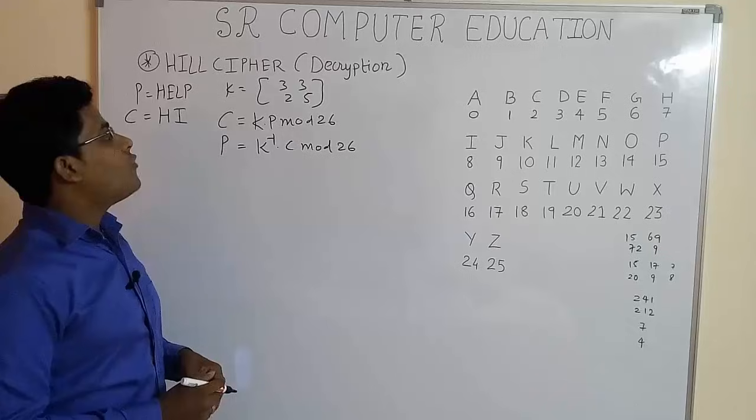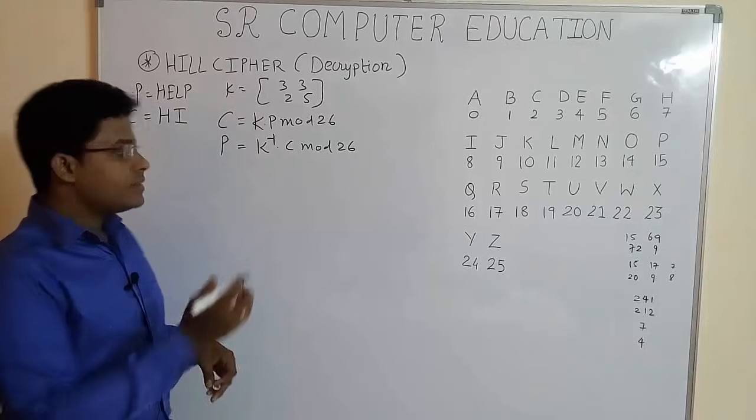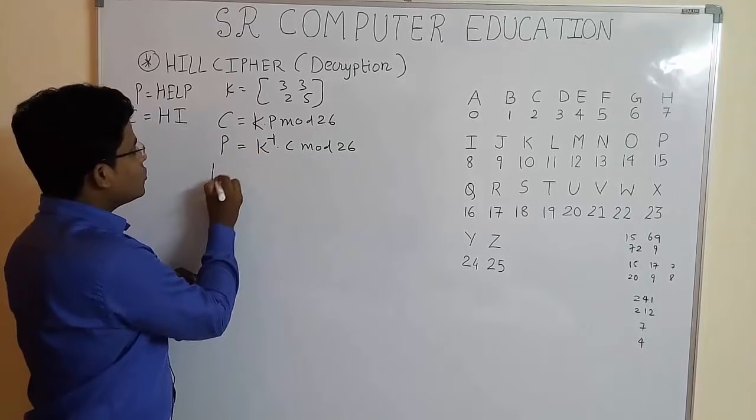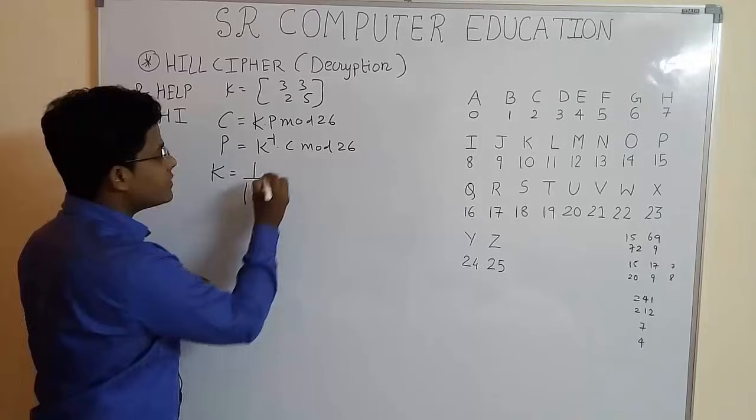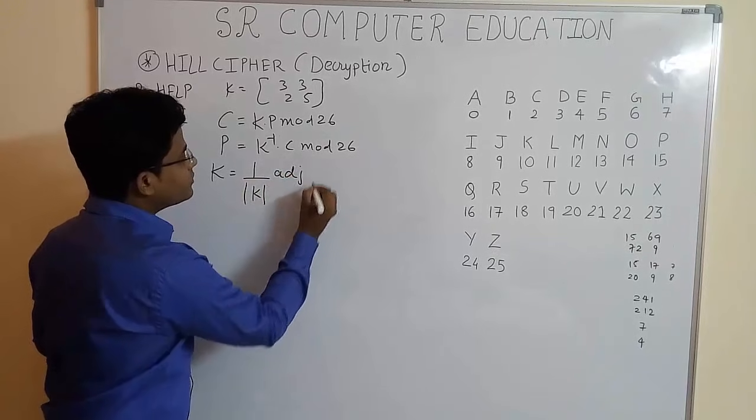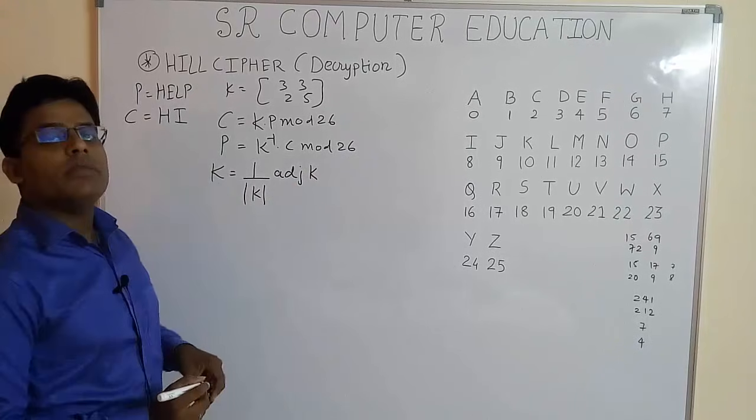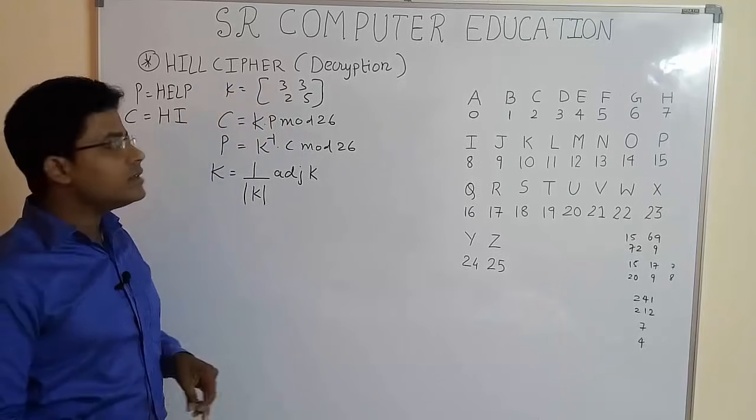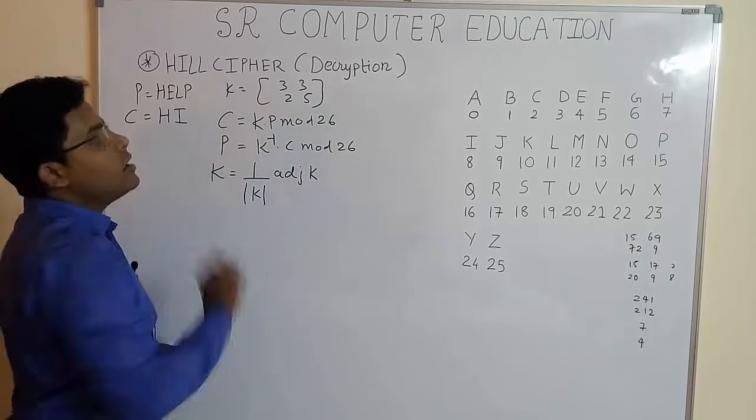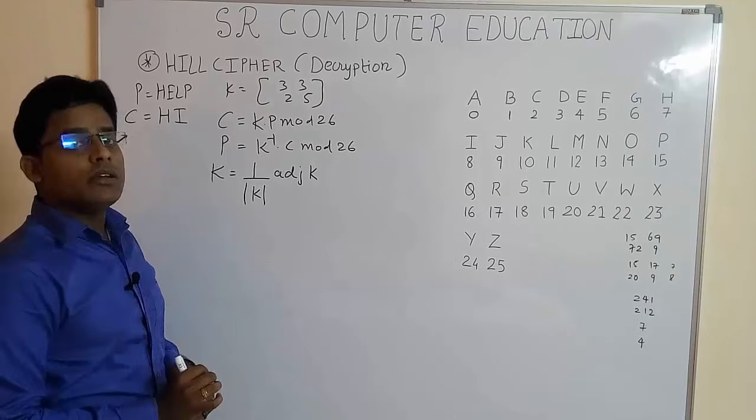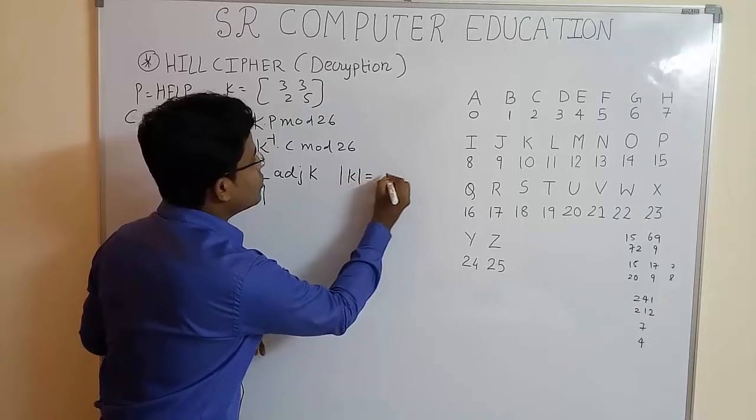Now the formula to find the inverse of any matrix, here the given matrix is K, so the formula to find the inverse is 1 upon determinant of that matrix into adjoint of that matrix. Now to find determinant of 2 by 2 matrix, it is easy. You have to just do the cross multiplication: 3 multiplied by 5 minus 3 multiplied by 2, that is 15 minus 6. So here we get determinant equal to 9.